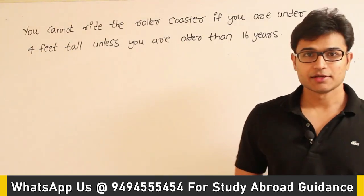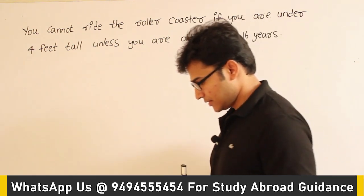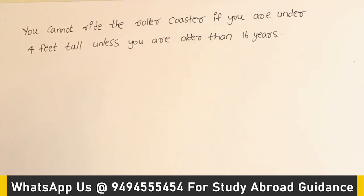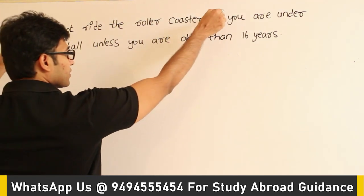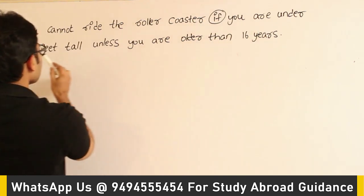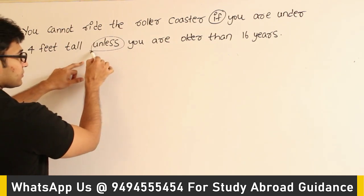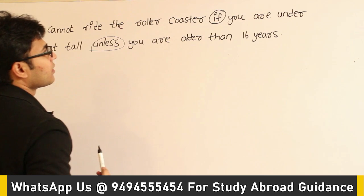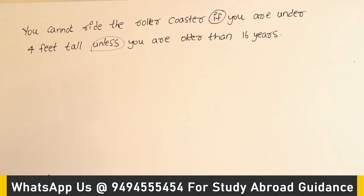Now, let's try to convert this English statement using the parameters. So, how can we convert this English statement using propositional variables? You have to understand what are the connectives used here. One connective is: 'you cannot ride the roller coaster if you are under 4 feet tall, unless you are older than 16 years.' If you see this, there are actually three statements here. For each statement, you can give one variable so that it will be convenient to represent them.